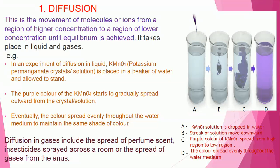From the image here on the screen, we have four beakers: A, B, C, and D. In beaker A, potassium permanganate solution is dropped in the water. The point where the solution touches is the point of higher concentration, where every other part is of lower concentration. In B, a streak of solution moved downward from the higher concentration to the lower concentration. In C, the purple color of the potassium permanganate spread from the higher region to the lower region. And in D, the color spread evenly throughout the water medium to maintain the same shade of color.